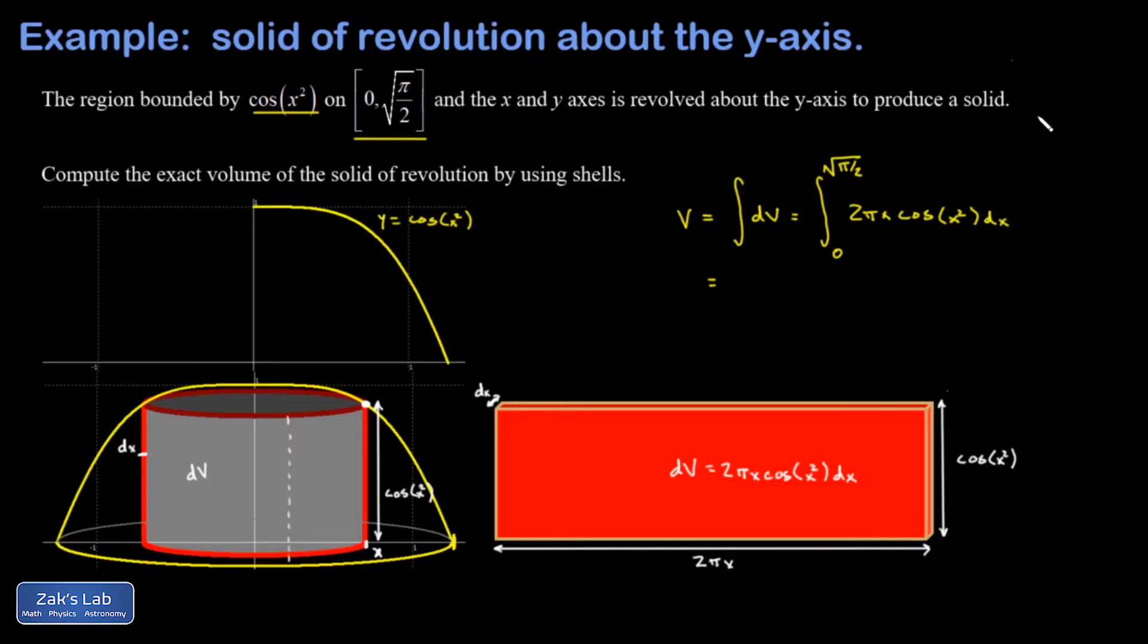So I notice that I have a function of a function here, cosine of x squared, and the inner function is x squared while the derivative of that is 2x, and I see 2x over here with a factor of pi tagging along, so I'm ready to just guess the chain rule backwards.